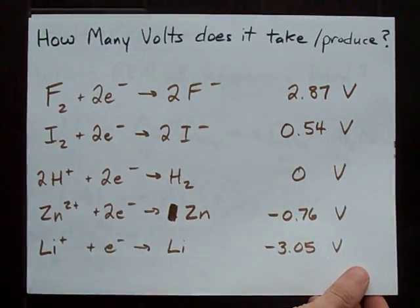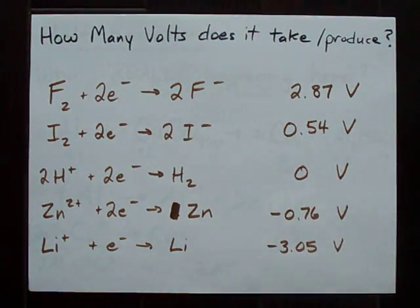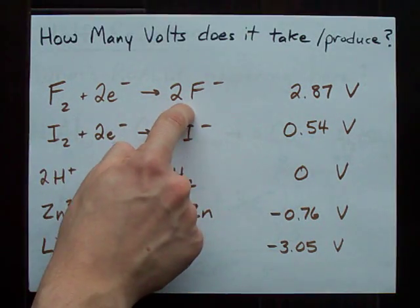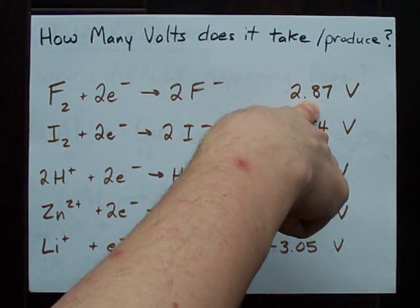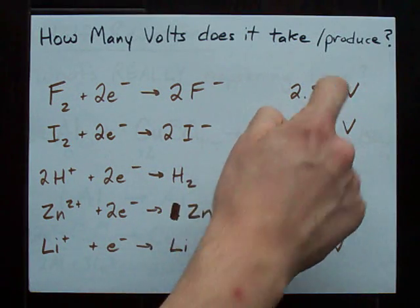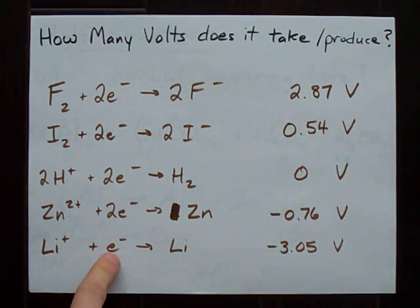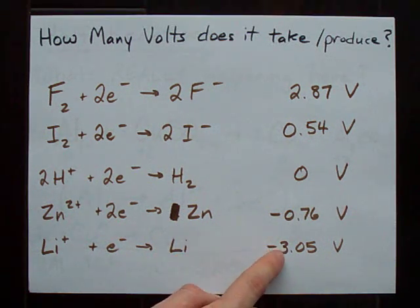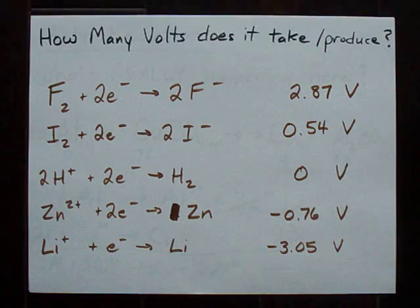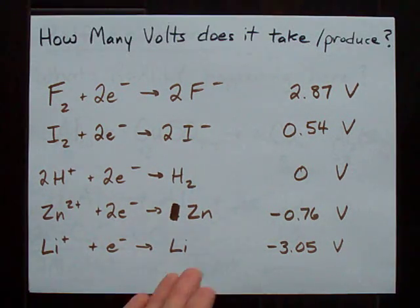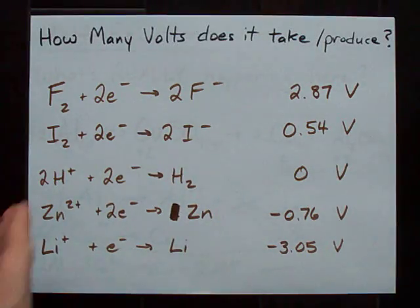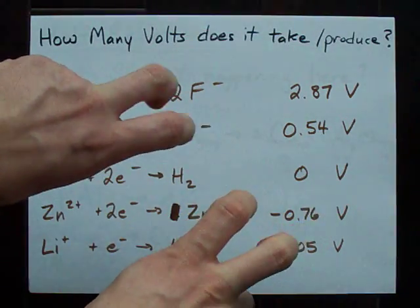Now you're probably going to be given a table in a textbook, but this is my little mini table that I've made for you. Fluorine can combine with two electrons to make two fluorides. That gives you 2.87 volts of potential difference. Lithium combining with an electron to make a lithium atom requires 3.05 volts of potential difference. What you'll notice is that these are all reductions or gains of electrons. This is called a table of reduction potentials.